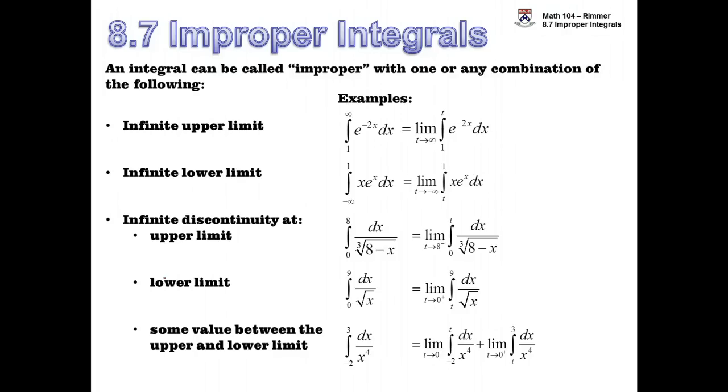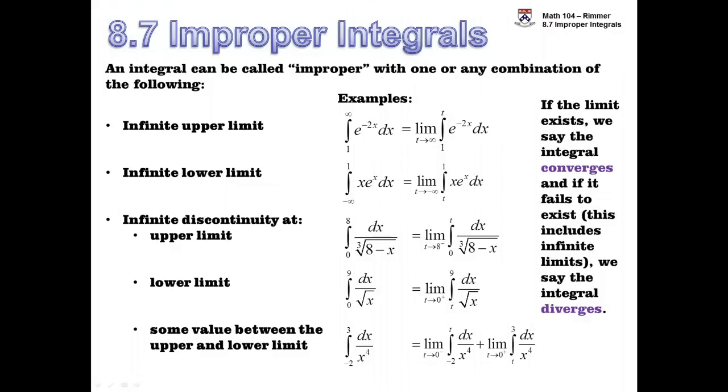Okay, the key is this though. If the limit exists, then we say that the integral converges. Now, if the limit fails to exist, there's two ways that could happen: it could be a limit that doesn't agree left and right-hand side, or it could be an infinite limit, either plus or minus infinity. If the limit fails to exist, we say that the integral diverges. So the question is going to be does the integral converge or diverge? And in certain cases, if it converges, we'll be able to find out what the integral converges to.